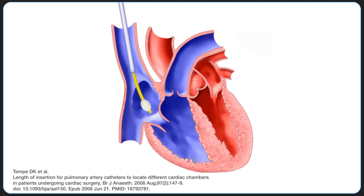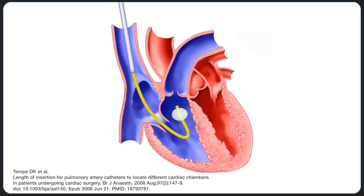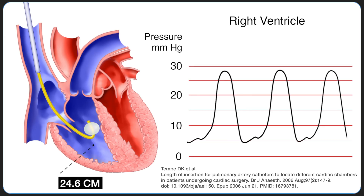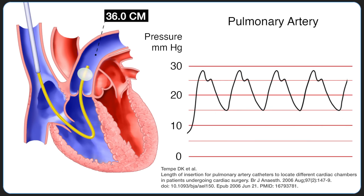A study published in 2006 measured the length of insertion to the right ventricle, pulmonary artery, and wedge position of pulmonary catheters in 300 adult patients in India through the right internal jugular vein. The right ventricle was reached at 24.6 cm and pulmonary artery was reached at 36 cm. The length of insertion to reach the pulmonary artery was directly related to the height of the patient.